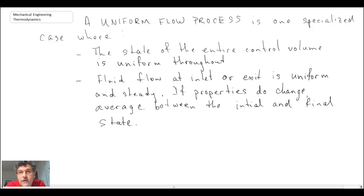Another thing that you assume is that the fluid flow at the inlet or the exit is uniform and steady. If properties are changing during the process, what you are supposed to do under the uniform flow process is average between the initial and the final states for either that inlet or that exit. So let's take a look at the form of the first law for a uniform flow process.